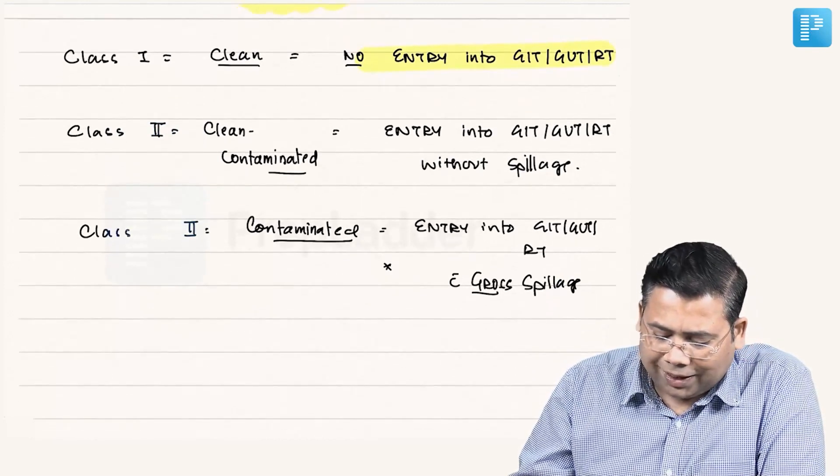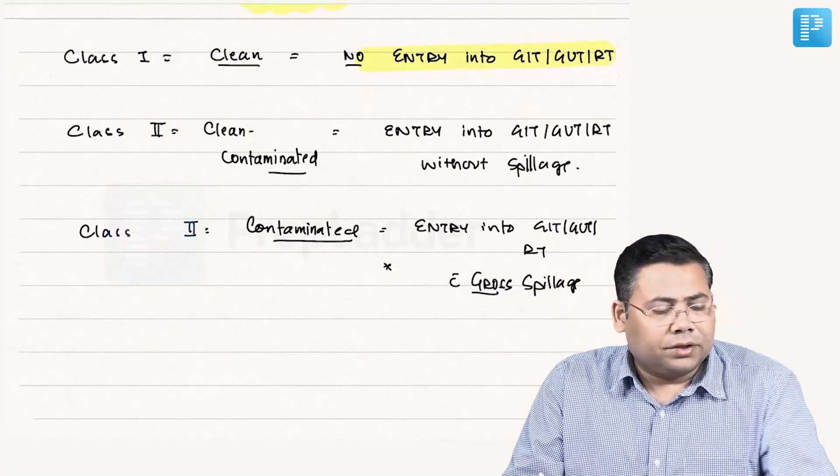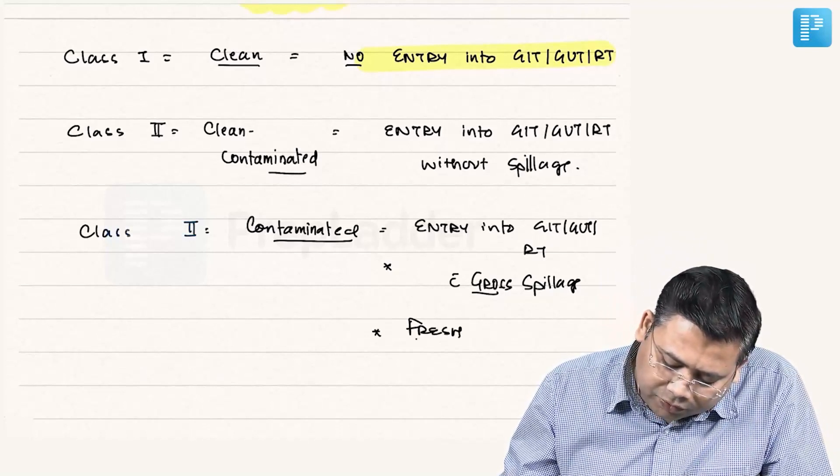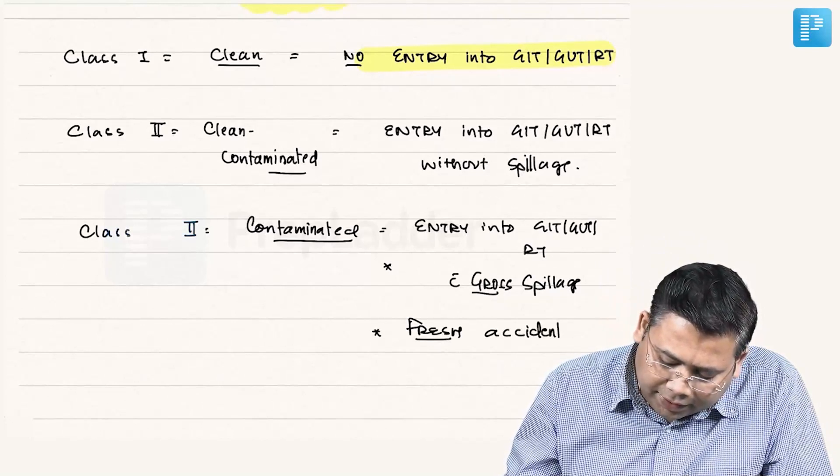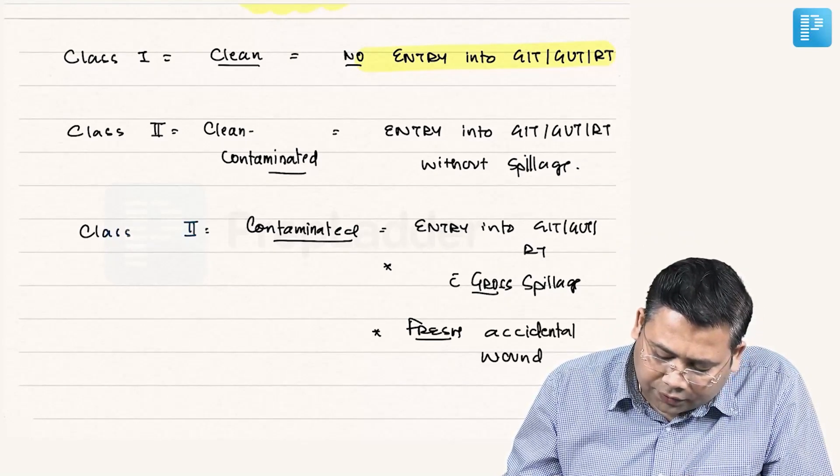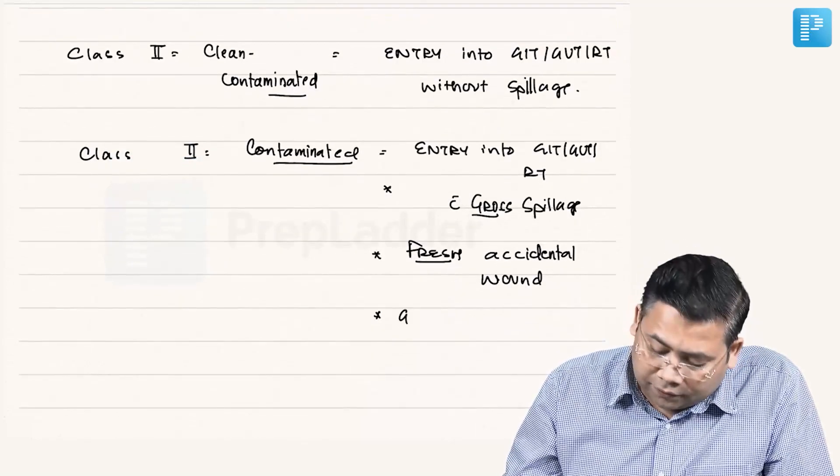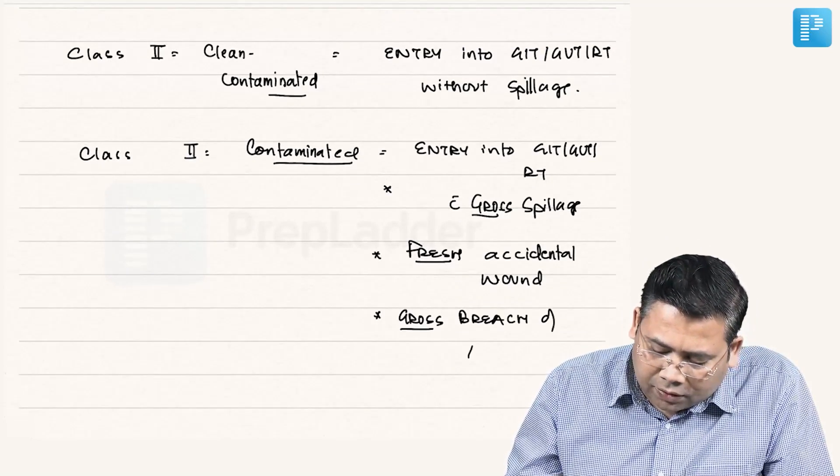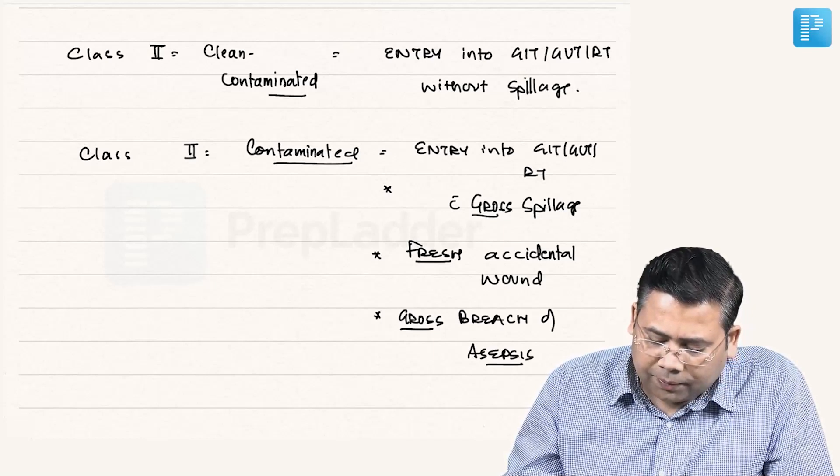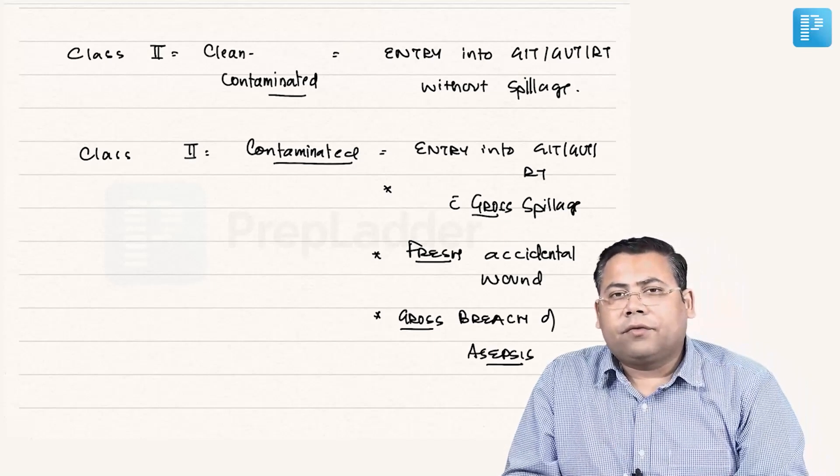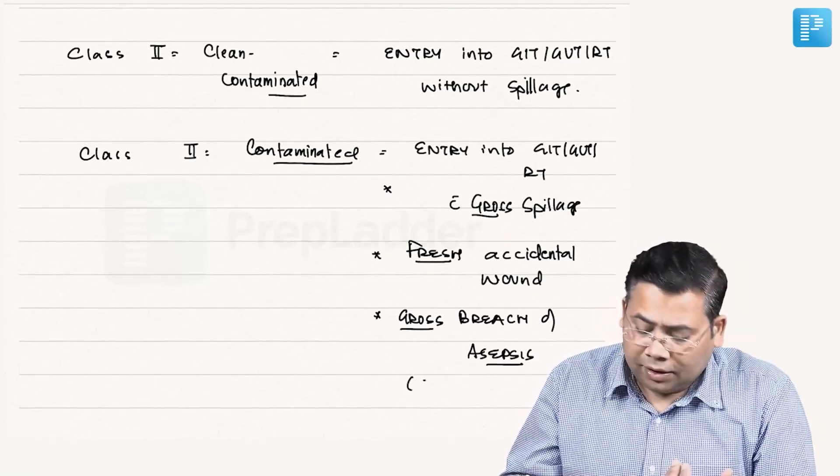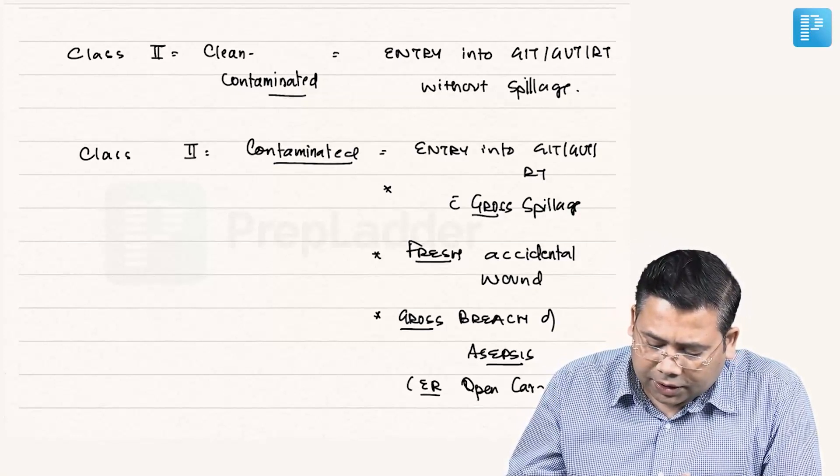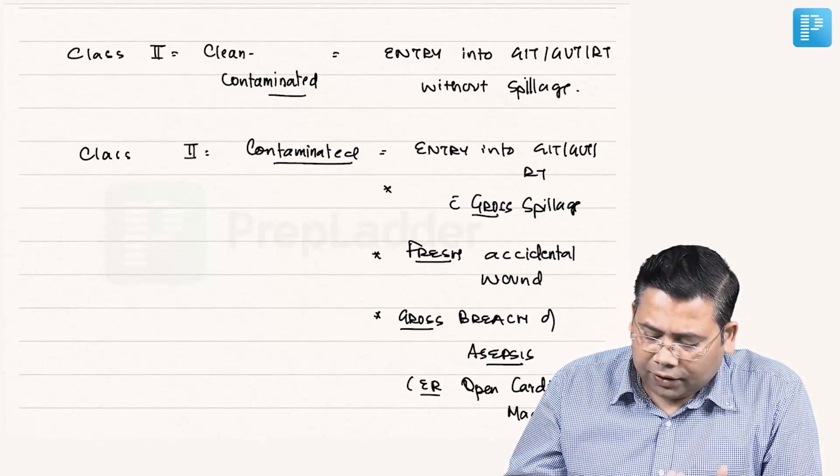If you see Class 1 and Class 2 wounds are exclusively associated with surgery. Whereas these wounds can be associated outside surgery also. So fresh accidental wounds, they are Class 3 wounds. Also, if there is gross breach of asepsis. What do you mean by gross breach of asepsis? When you are doing a procedure in a place which is not sedent, like outside the operation theater. If you have done a procedure, that is gross breach of asepsis. Like ER room cardiac massage, emergency room open cardiac massage. Open cardiac massage for a patient brought with ventricular asystole.